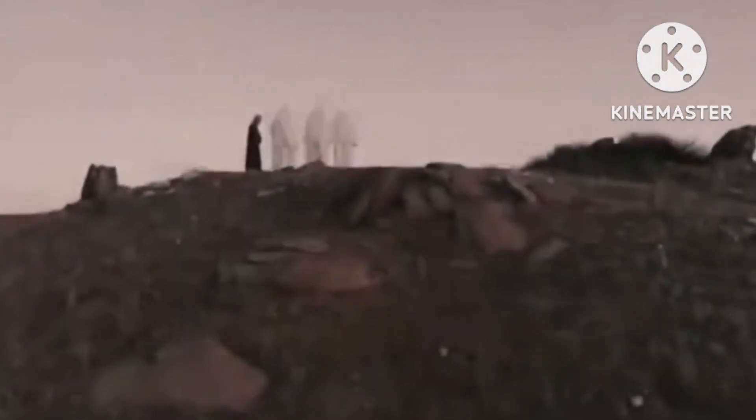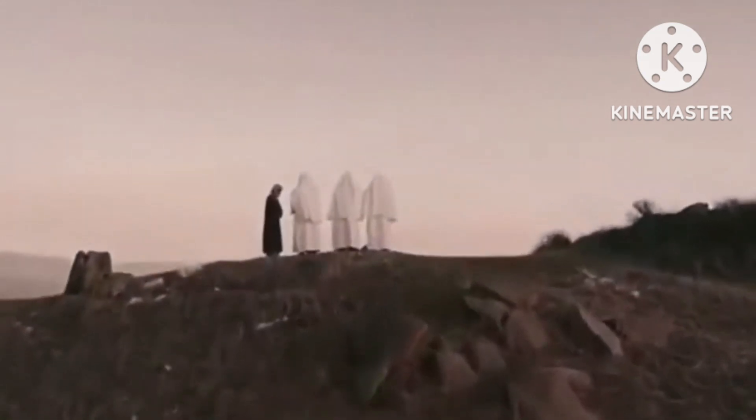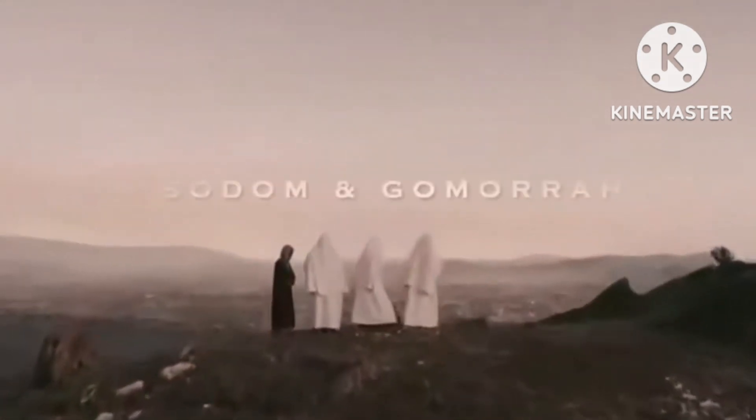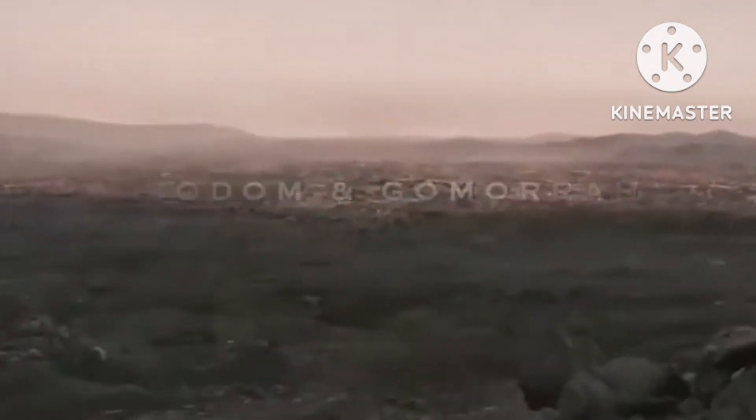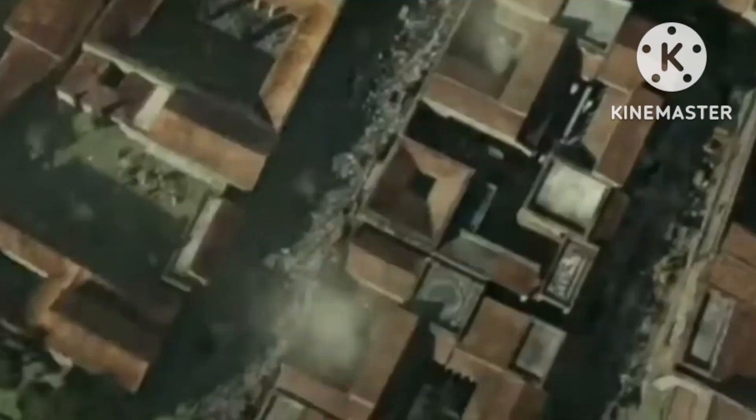And Abraham drew near and said, Wilt thou also destroy the righteous with the wicked? Peradventure, there be fifty righteous within the city. Wilt thou also destroy and not spare the place for the fifty righteous that are therein? That be far from thee to do after this manner, to slay the righteous with the wicked, and that the righteous should be as the wicked. That be far from thee. Shall not the judge of all the earth do right? And the Lord said, If I find in Sodom fifty righteous within the city, then I will spare all the place for their sakes.